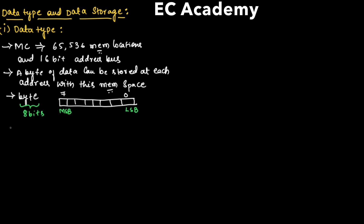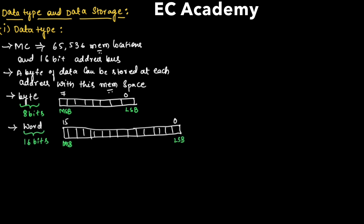In the same way, if we consider a word, it consists of 16 bits, which can be numbered from 0 to 15. Location 0 is known as LSB, the least significant bit, and location 15 is known as MSB, the most significant bit.